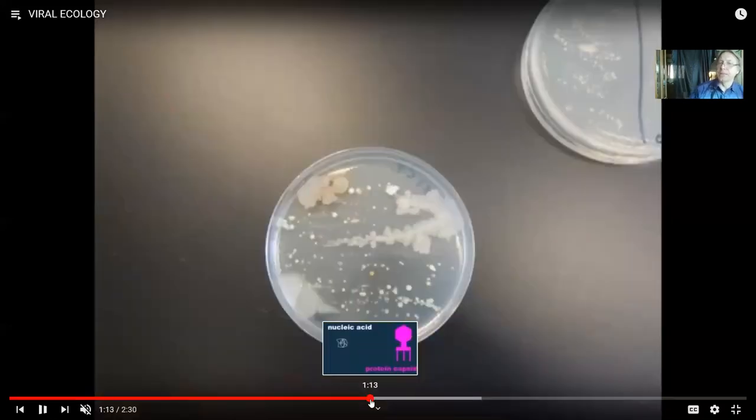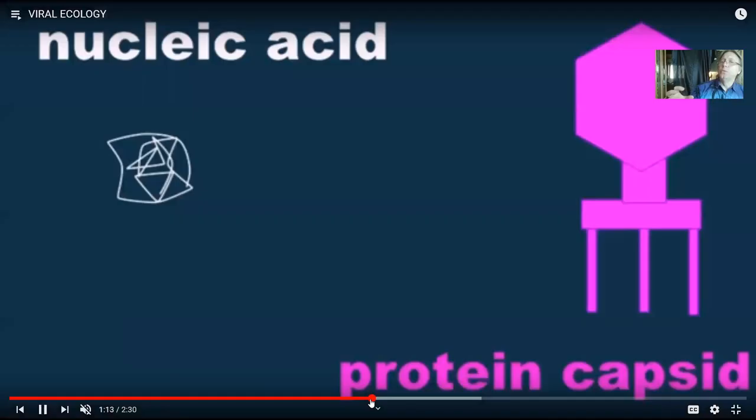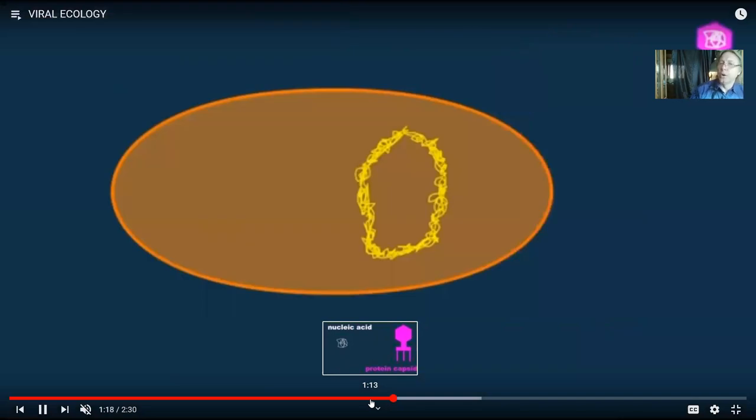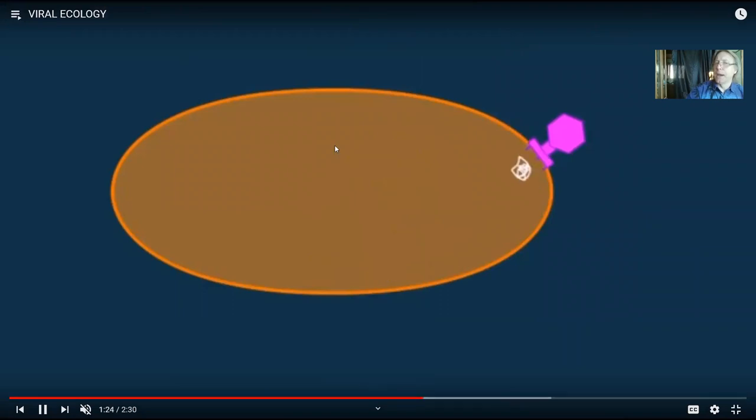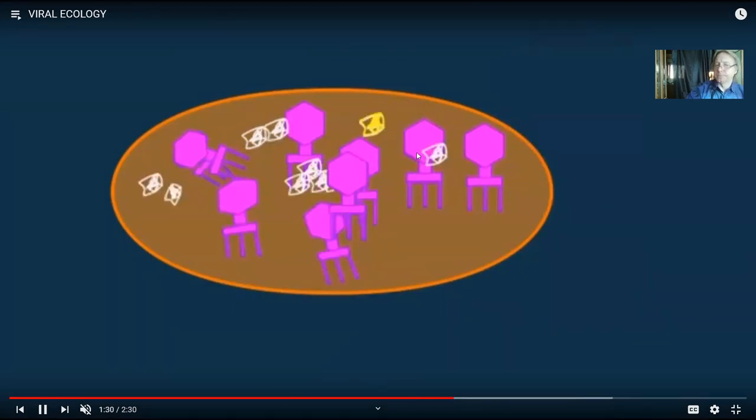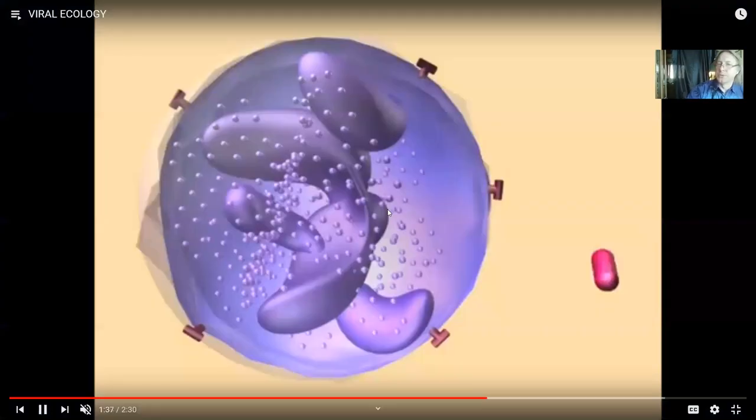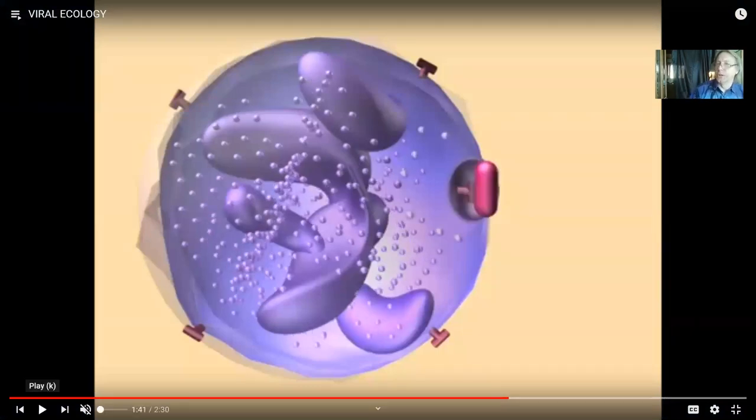Viruses sometimes accidentally move some of the DNA from the host into another host. So viruses sometimes accidentally take some of these yellow bacterial genes by accident, not the white viral genes, put them into a new viral package, and then transmit it from one organism to the next.